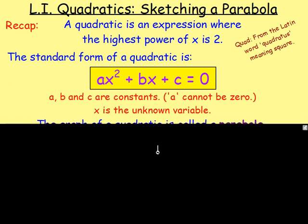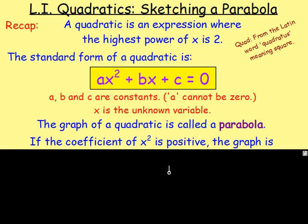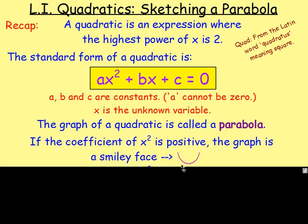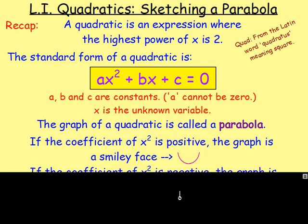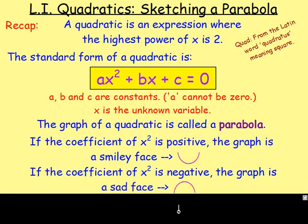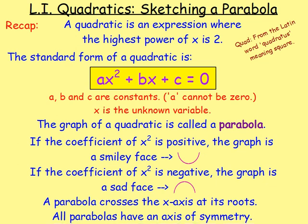The graph of a quadratic is known as a parabola. And if the coefficient of x squared is positive, then the graph is going to look like a smiley face. And if the coefficient of x squared is negative, the graph is going to look like a sad face. The parabola crosses the x-axis at what's known as its roots, and all parabolas have an axis of symmetry, or a line of symmetry.